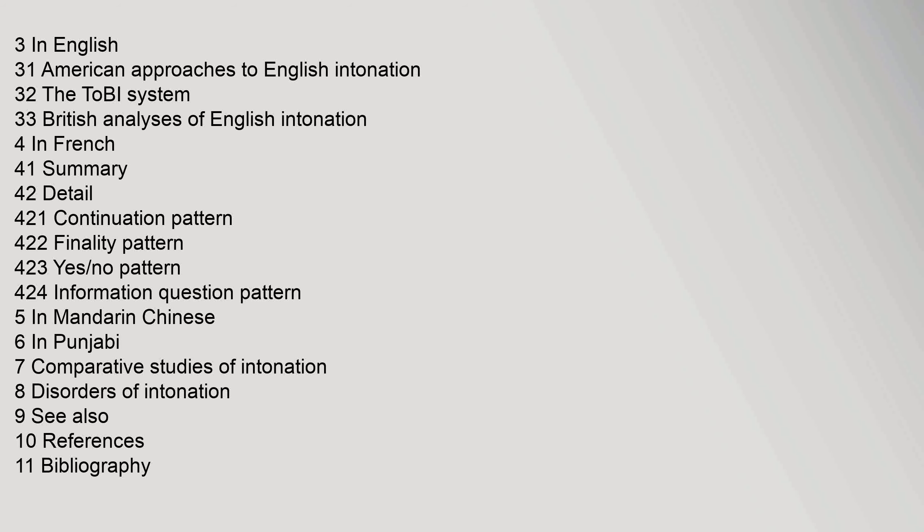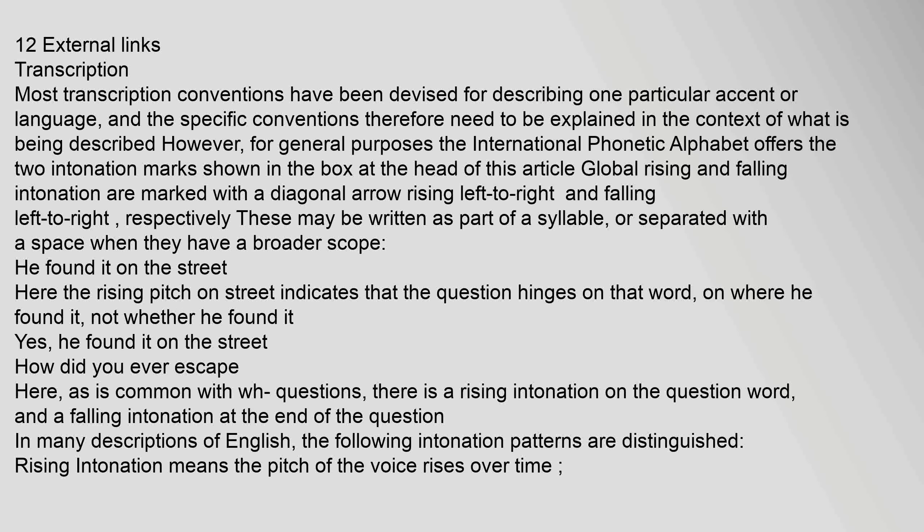Most transcription conventions have been devised for describing one particular accent or language, and the specific conventions therefore need to be explained in the context of what is being described. For general purposes, the International Phonetic Alphabet offers two intonation marks. Global rising and falling intonation are marked with a diagonal arrow rising left to right and falling left to right, respectively. These may be written as part of a syllable, or separated with a space when they have a broader scope.